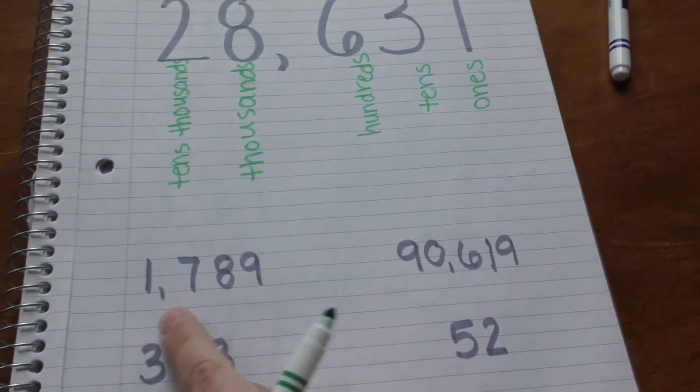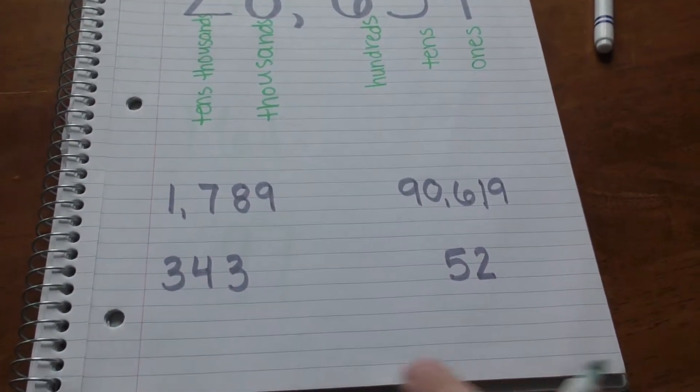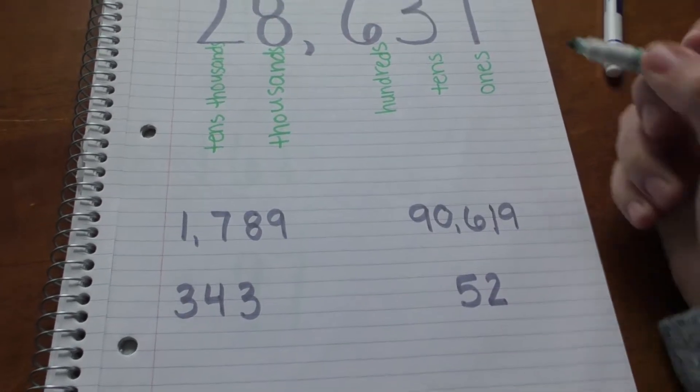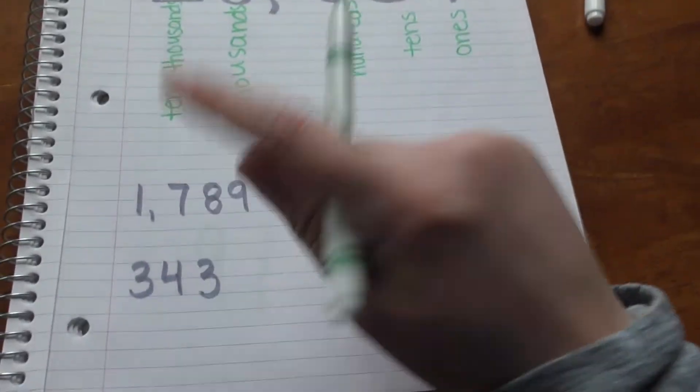Okay now down here what we're gonna do is we're gonna circle the tens place on all of these numbers. I'm gonna circle the tens place in green. So I see tens is the second number in.